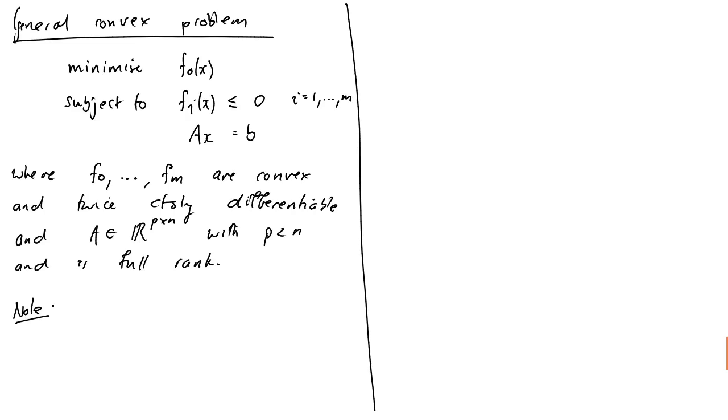Okay, we're, F0 through to Fm are all convex, and twice continuously differentiable. And our matrix A is in Rp by n, with p less than n, and is full rank.